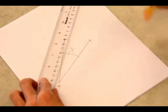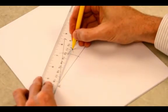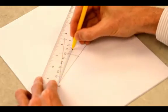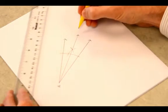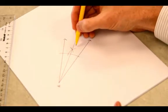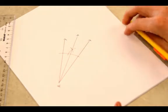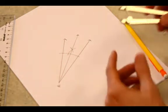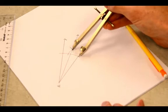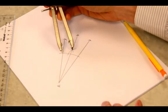Then to draw my bisector, I'm just going to draw from vertex A right through that intersection. So there's your angle bisector. It bisects exactly in two like it's supposed to do. And again, we use the compass to measure the distance here and here.